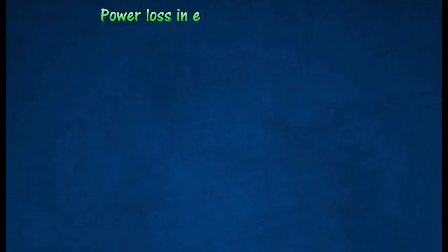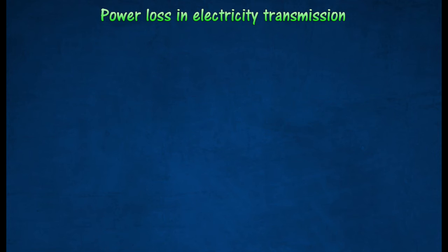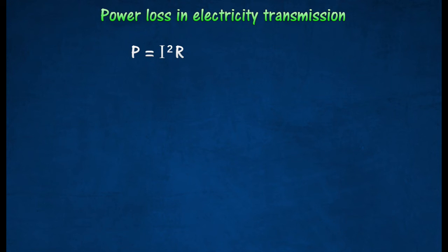The power loss in electricity transmission cables is due to the heat generated in the cables. When a current I flows in a cable, the power loss through heating is P = I²R, where R is the resistance of the cable.